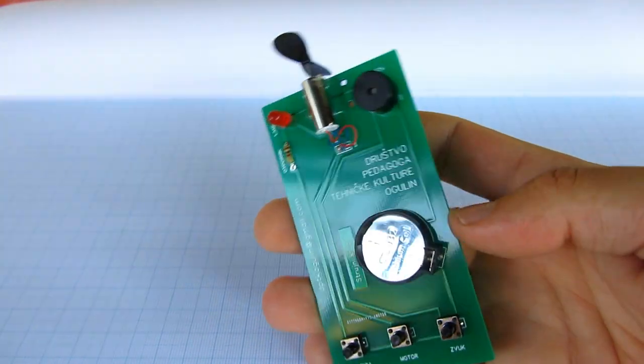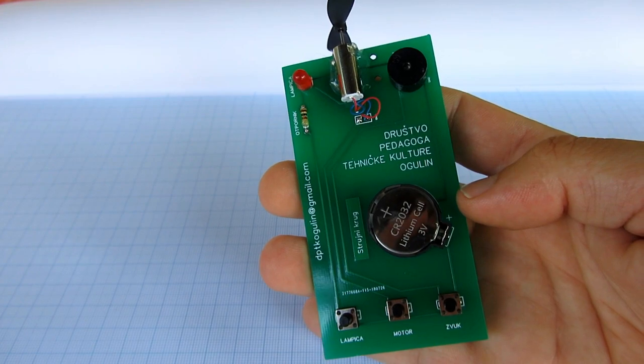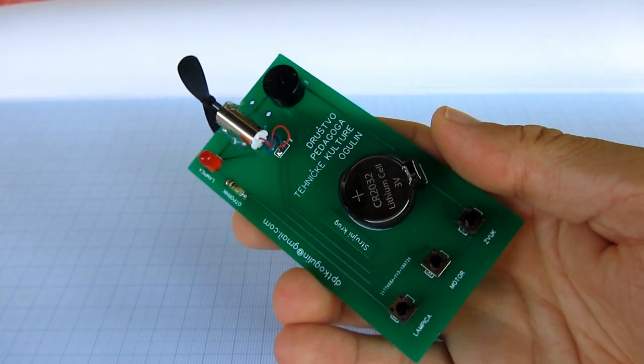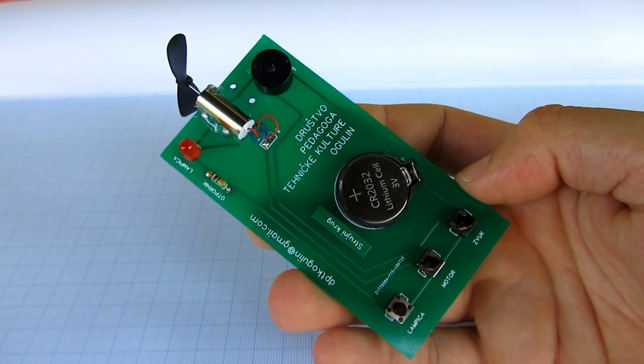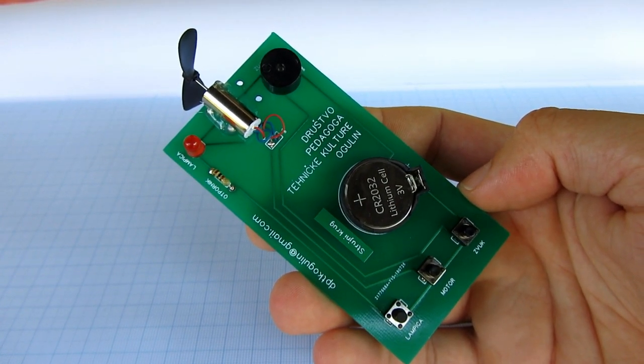This PCB contains battery, three push button switches, resistor, LED, DC motor and buzzer.